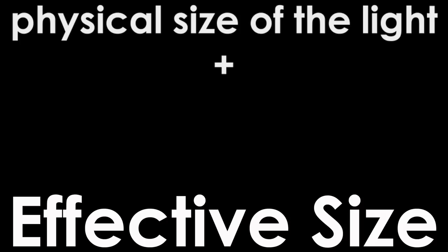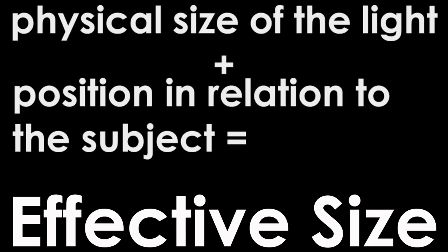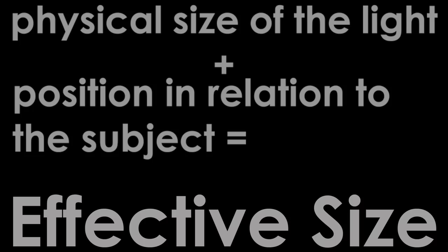An important term is effective size. The effective size of a light is based both on the physical size of the light and its position in relation to the subject. The closer a light is to the subject, the larger its effective size and the softer the light will be. The farther away a light is from the subject, the smaller the effective size and the harder the light will be.